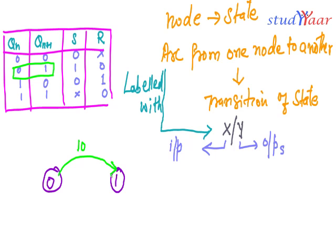Similarly, when does my state go from 1 to 0? This is 1 to 0. It goes when SR is 0 1, so I'm going to write over here 0 1. These are S and R input values.